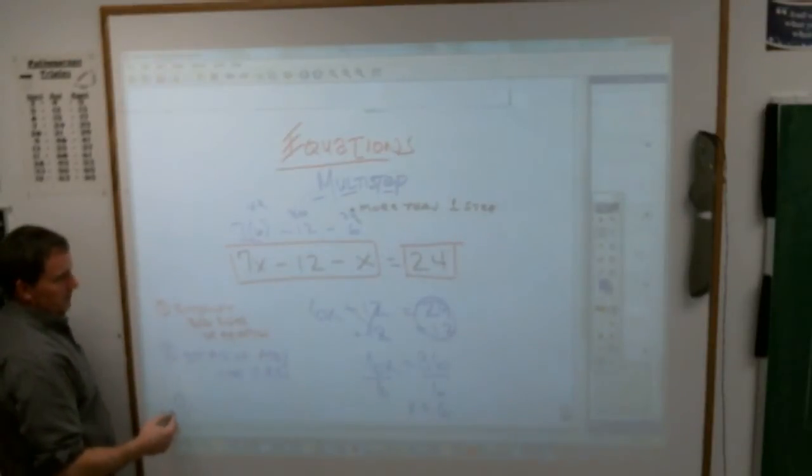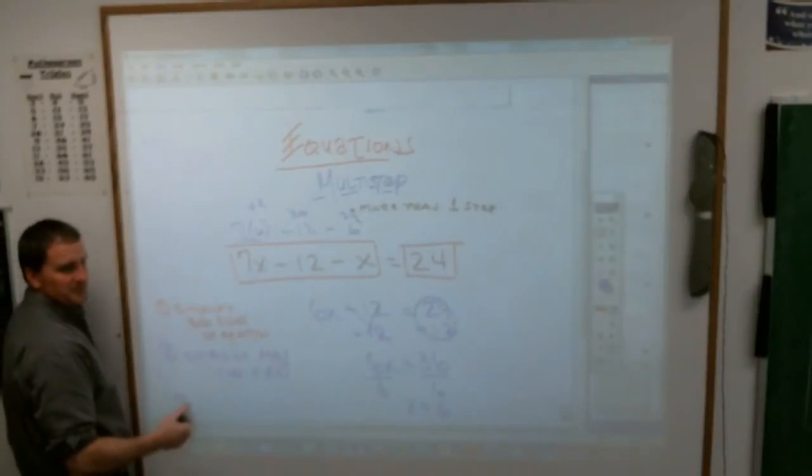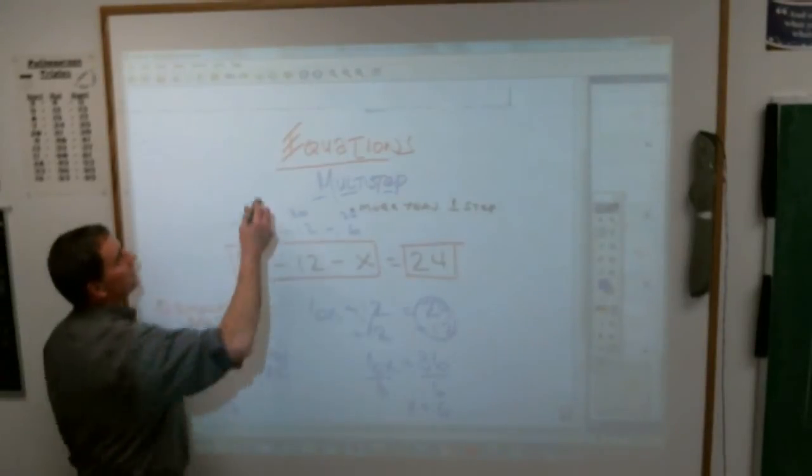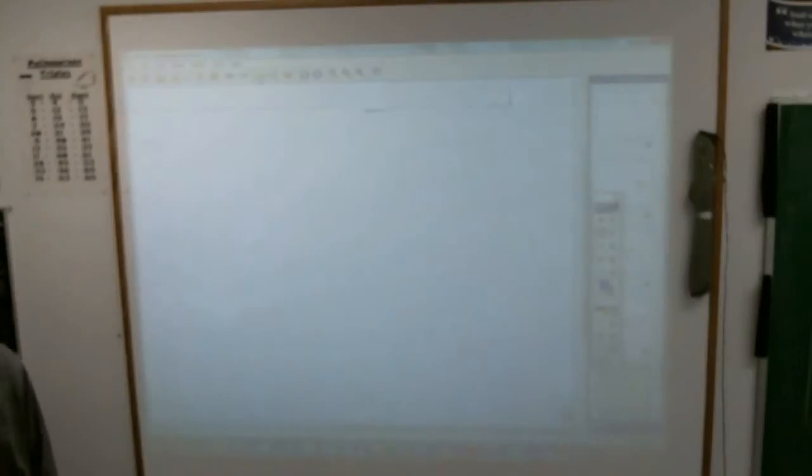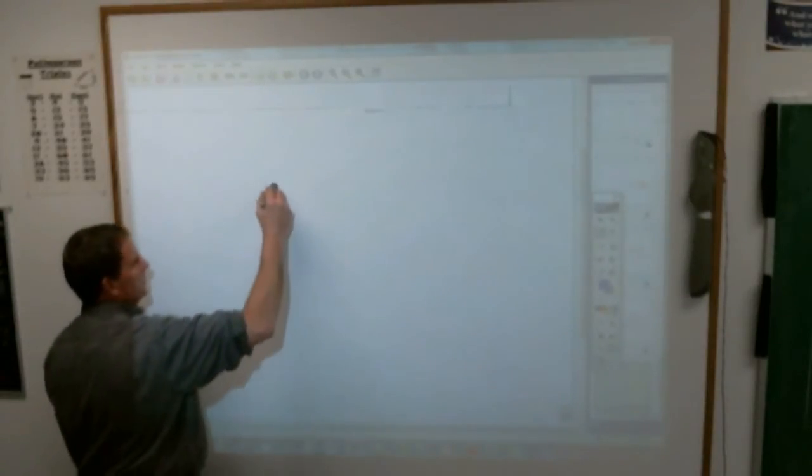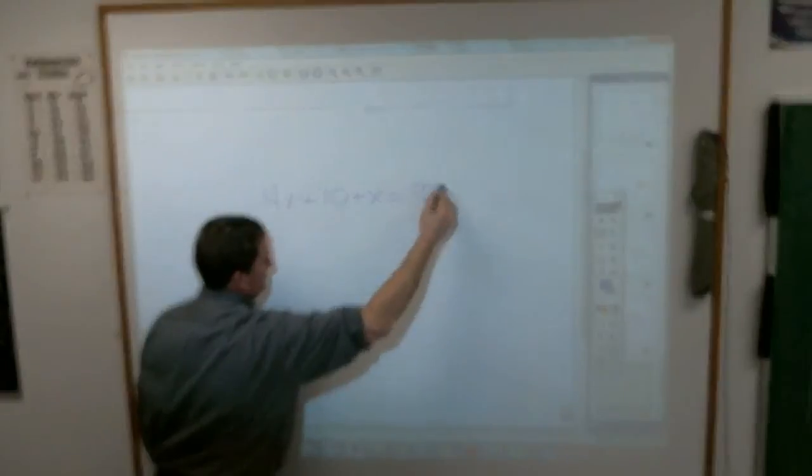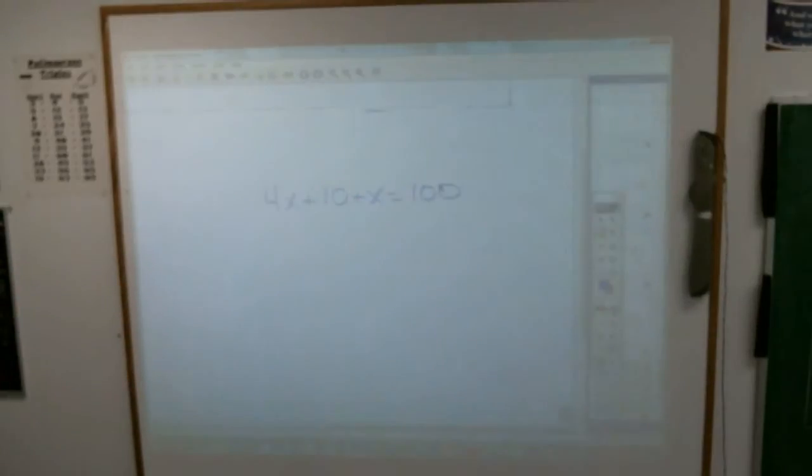Let's do another. What's that mean? Let's do another problem. 4x plus 10 plus x equals 100. What number when you multiply it by 4 and then add 10, then add that number again to it, it gives you 100. That's really what you're asking there.